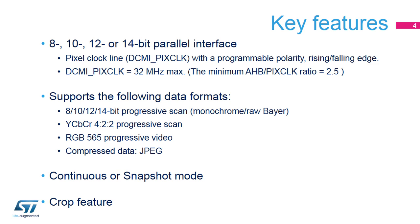The maximum DCMI-PIX-CLK is 32 MHz. The DCMI pixel clock and advanced high-performance bus (AHB) clock must respect the minimum AHB-to-PIX-CLK ratio of 2.5. The DCMI supports color or monochrome cameras using different data formats: uncoded parallel data, also known as progressive scan, which can be monochrome or color raw; luminance color-coded on 8 bits; 4-2-2 progressive scan; and RGB-565, which is red-green-blue information coded on 16 bits.